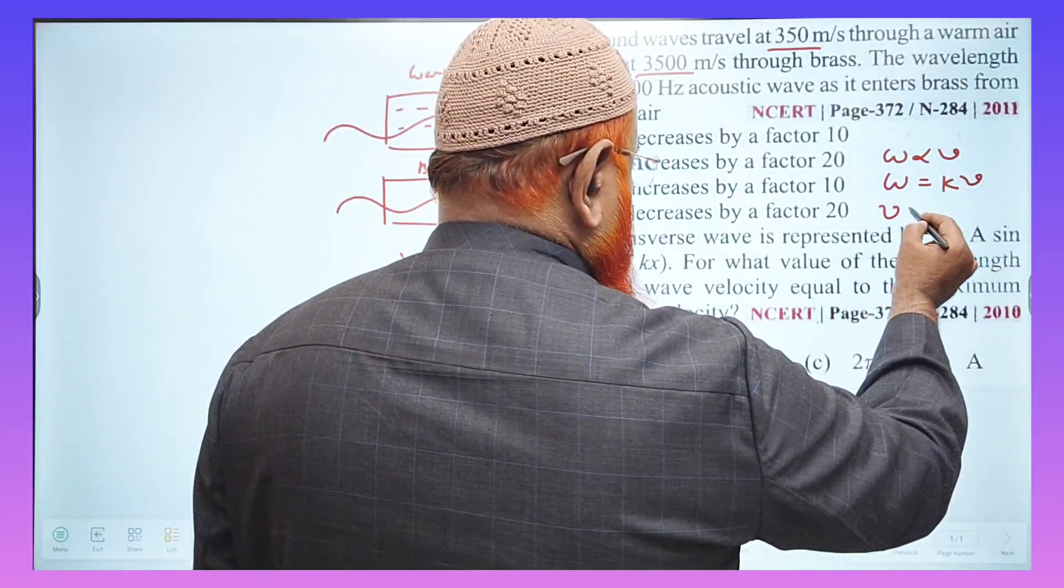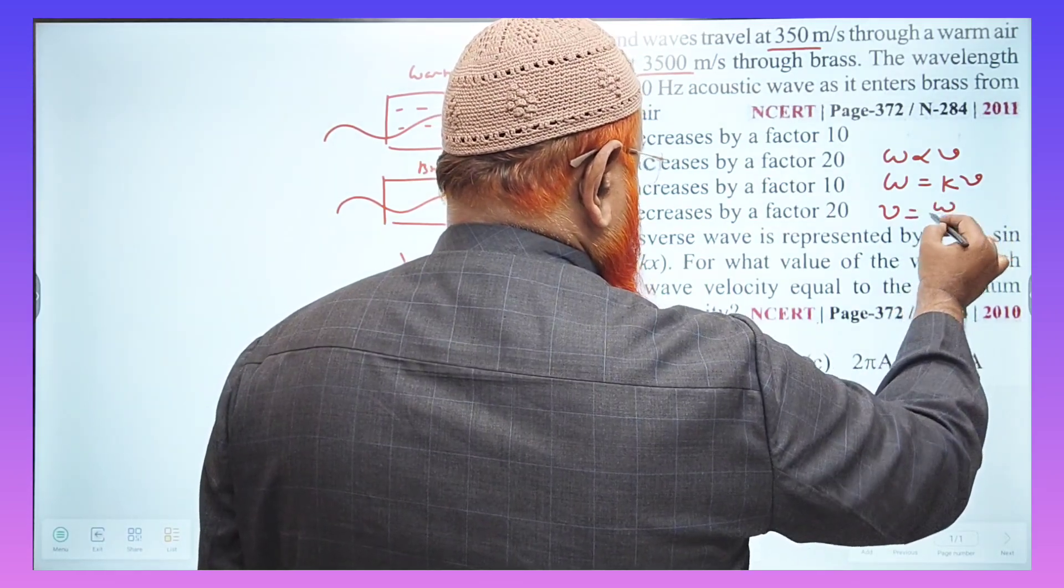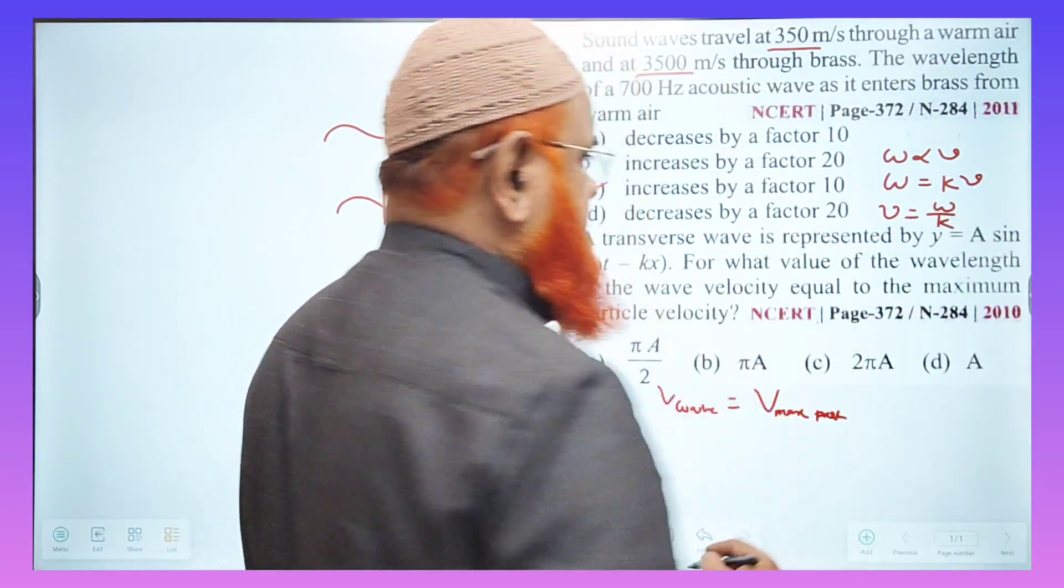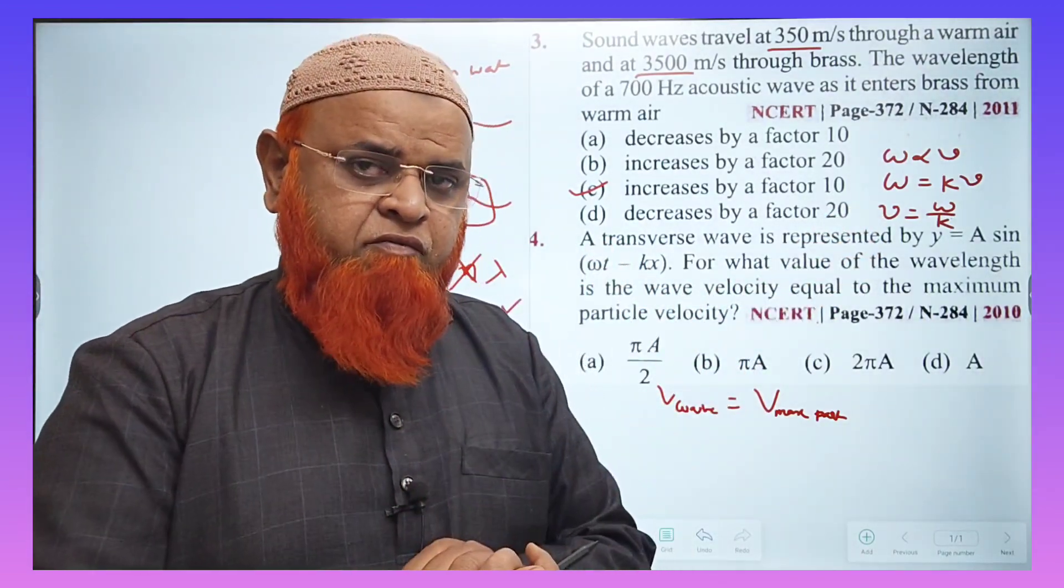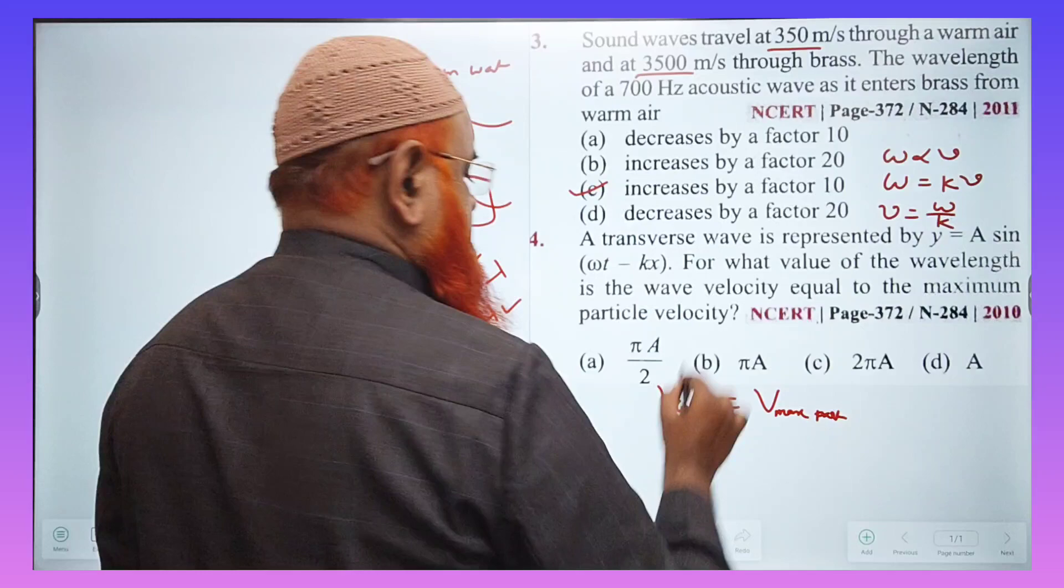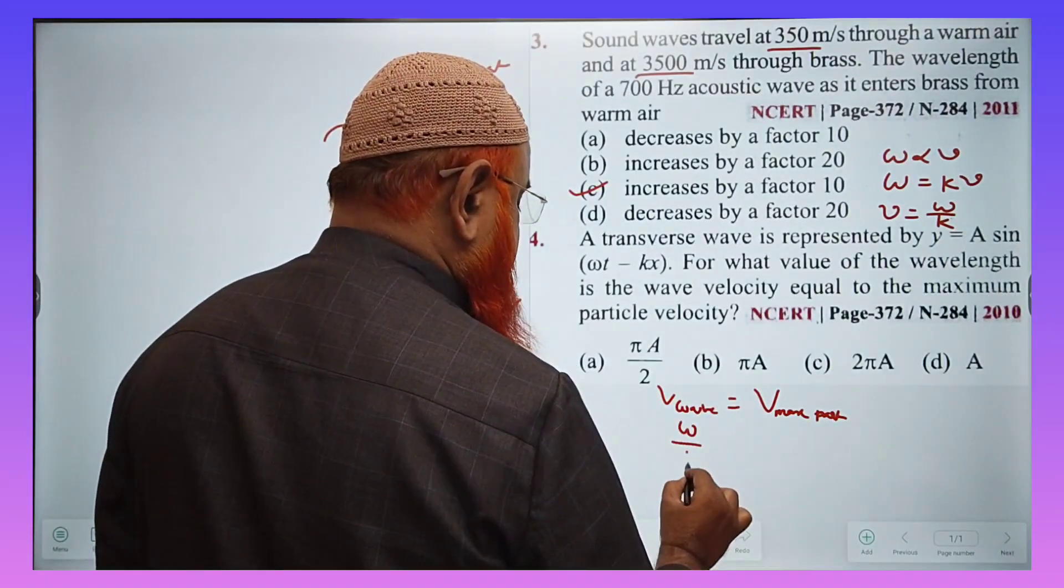You know that I already told that omega is directly proportional to velocity. Angular velocity is directly proportional to linear velocity. If you remove this proportionality, you will get a constant k. So here, v is equal to omega by k.